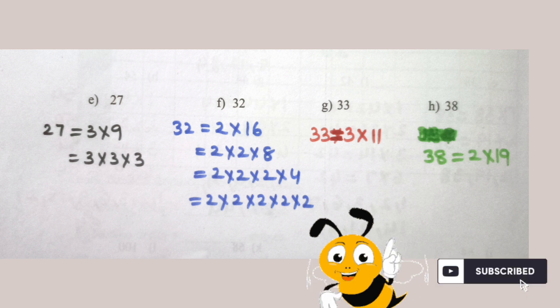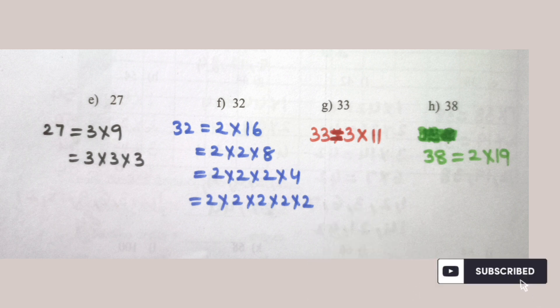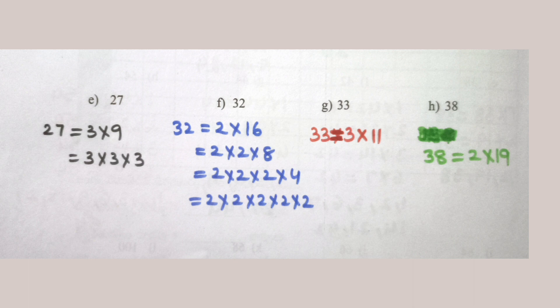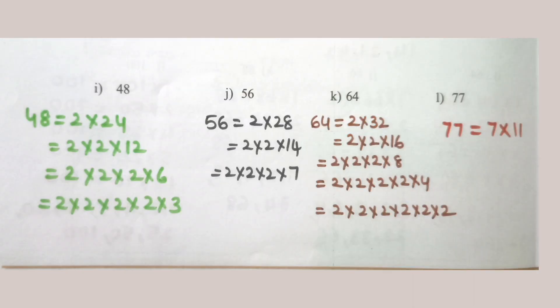32 = 2 × 2 × 2 × 2 × 2. 64 = 2 × 2 × 2 × 2 × 2 × 2. 77 = 7 × 11.